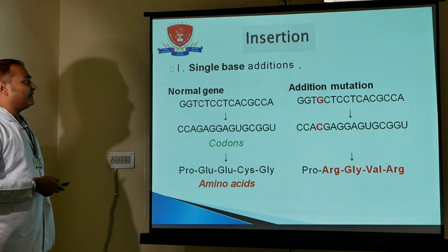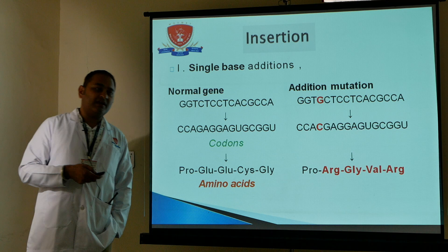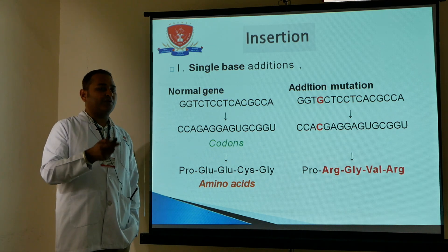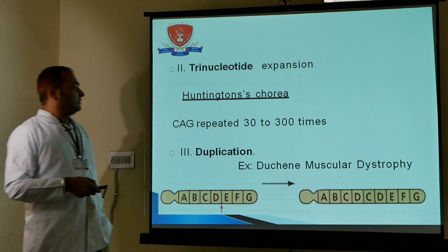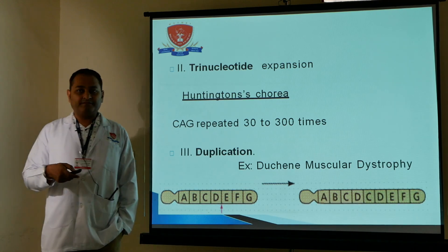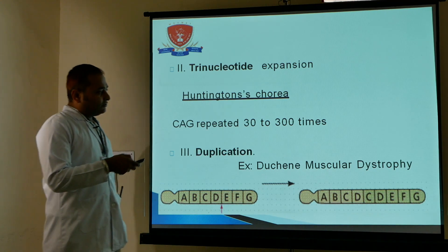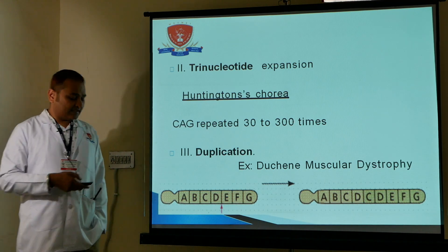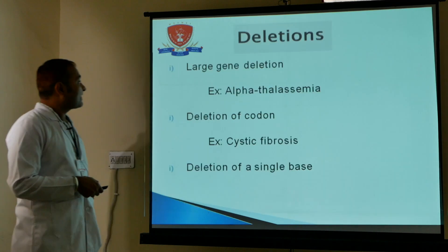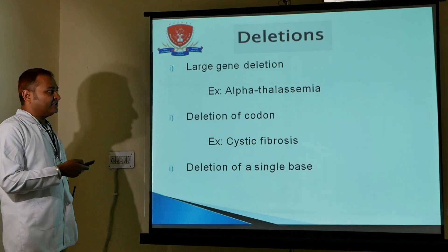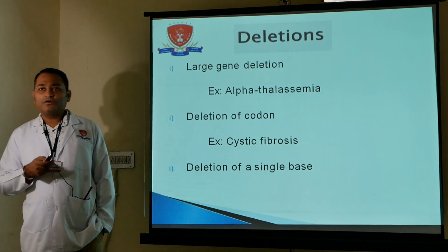With single base pair insertion, the sequence changes and different kinds of amino acids and proteins are formed. Under this condition, normal proteins are not synthesized; different, non-functional proteins result. For example, Duchenne muscular dystrophy results from large gene deletion, and alpha thalassemia results from deletion of a codon.